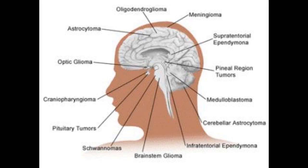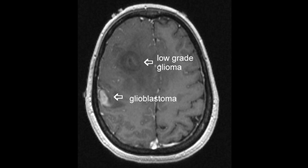Glioma tumors are one of the more common tumors and can be classified as either benign or malignant. A glioma tumor grows from a glial cell, and there are many different types of gliomas such as astrocytoma, oligodendroglioma, ependymomas, brain stem glioma, and mixed glioma.